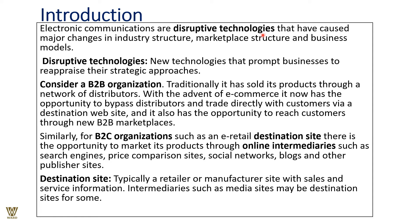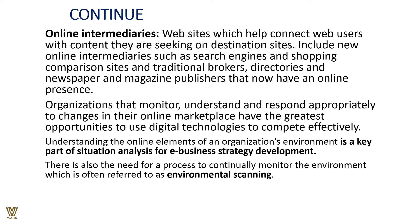Online intermediaries include social networks, blogs, and other publishers. A destination site is typically a retailer or manufacturer site with sales and service information. Intermediaries — websites that help connect web users with content they are seeking — include online intermediaries such as search engines, shopping comparison sites, directories, and newspapers and magazine publishers that now have an online presence.